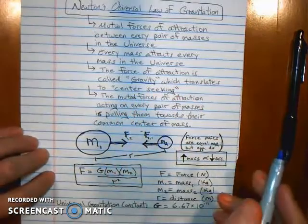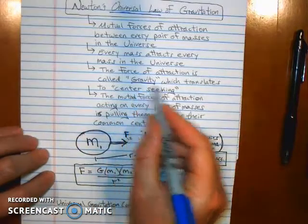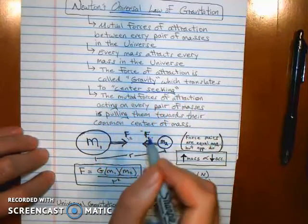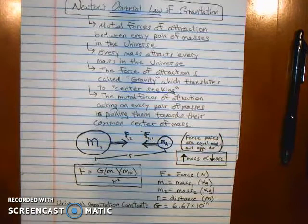acts to pull each object towards a common center because gravity, roughly translated, means center seeking. Everything is seeking a common center. And if you think about that, that's why the largest masses in the universe, planets, stars, are round, are spherical,